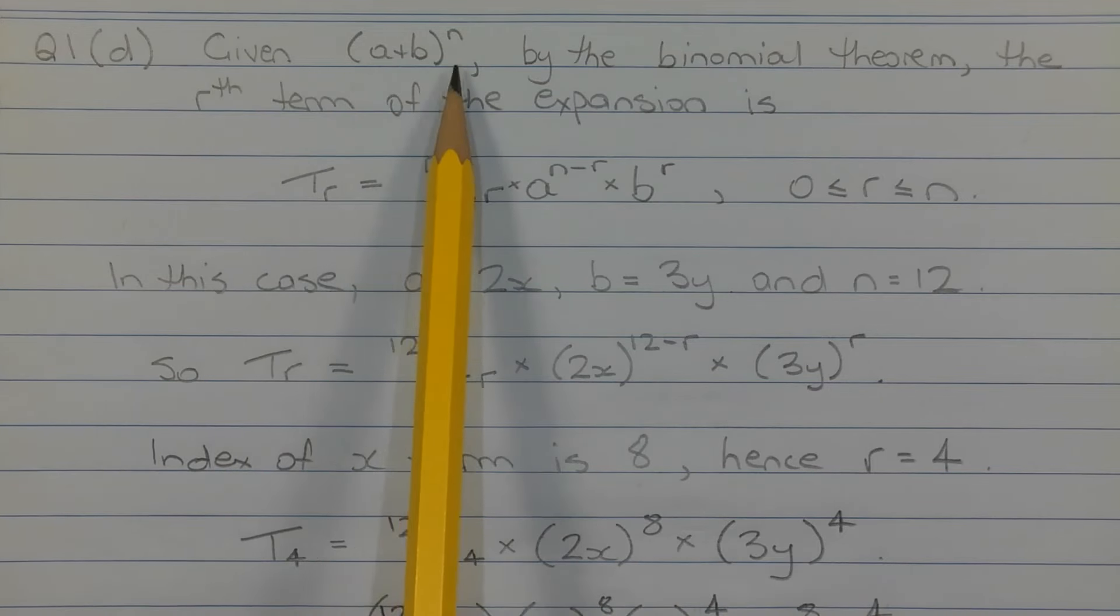Given a plus b in brackets to the power of n, by the binomial theorem, the rth term of the expansion is tr equals n choose r times a to the power of n minus r times b to the power of r, where r is an integer greater than or equal to 0 and less than or equal to n.